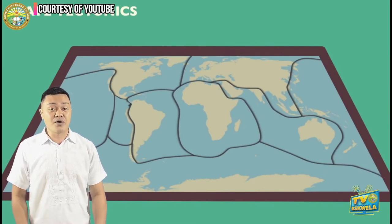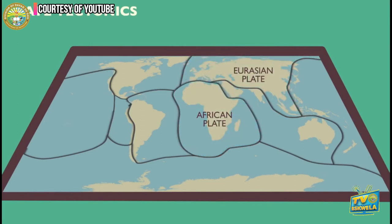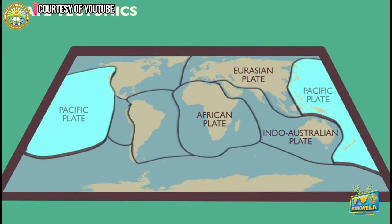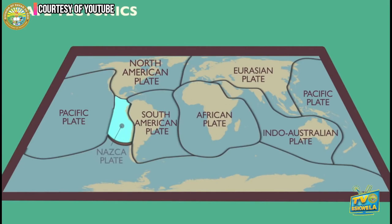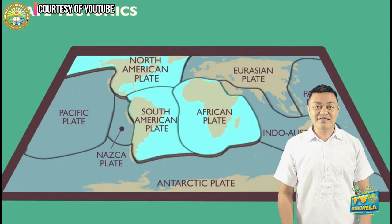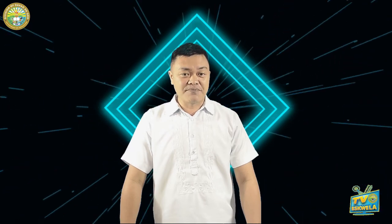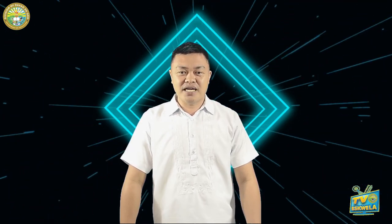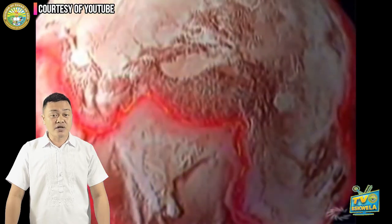There are eight major plates around the world: the Eurasian plate, African plate, Indo-Australian plate, Pacific plate, North American plate, South American plate, Nazca, and Antarctic plate. Some of these plates mark the boundaries of the continents, like the North American plate, South American plate, and African plate. Other plates include more than one continent, like Europe and Asia. And some minor plates include the Philippine Sea plate, Arabian plate, Caribbean plate, and Scotia plate. In between these plates are called plate boundaries, where two or more tectonic plates meet.